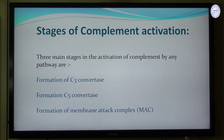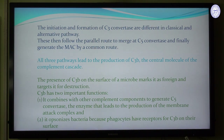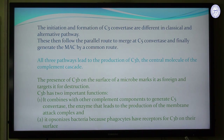The stages of complement activation are common to all three pathways — classical, alternative, and lectin. First is the formation of C3 convertase; second, formation of C5 convertase; and finally, there is formation of the membrane attack complex (MAC). The formation of C3 convertase differs between classical and alternative pathways, but all pathways ultimately merge into a common route: the generation of the membrane attack complex.